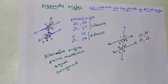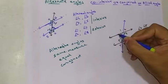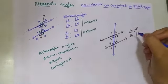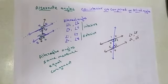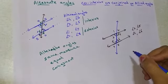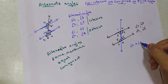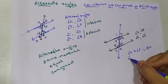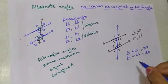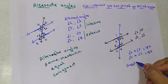Now for the co-interior angles: this part is the interior side of one side, and this is the interior side of the other side of the transversal. They are always supplementary — that is, they add up to 180. So angle 3 plus angle 5 should be 180, and angle 4 plus angle 6 should also be 180. These co-interior angles are supplementary angles.